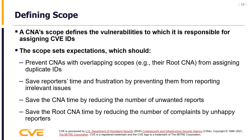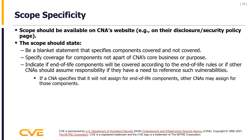A CNA scope defines the vulnerabilities for which it is responsible for assigning CVE IDs. The scope sets expectations that help prevent overlapping scopes with other CNAs, save reporters time by preventing irrelevant reports, reduce unwanted reports for the CNA, and reduce complaints escalated to the root CNA. The scope should be available on the CNA's website as a blanket statement specifying what components will and will not be covered, including coverage for components not part of the CNA's core business, and whether end-of-life components will be covered.